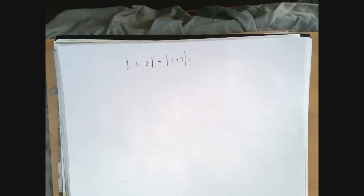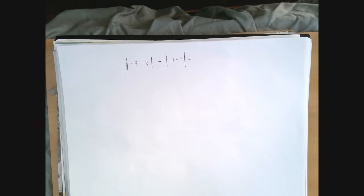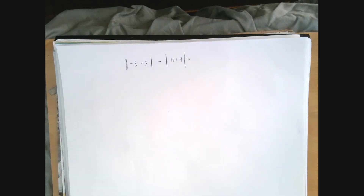This is an order of operations problem. The problem with the absolute value sign is that you can't tell from looking at it whether it's opening or closing. So even though it's a grouping symbol, it's a little bit more difficult than a regular parenthesis.